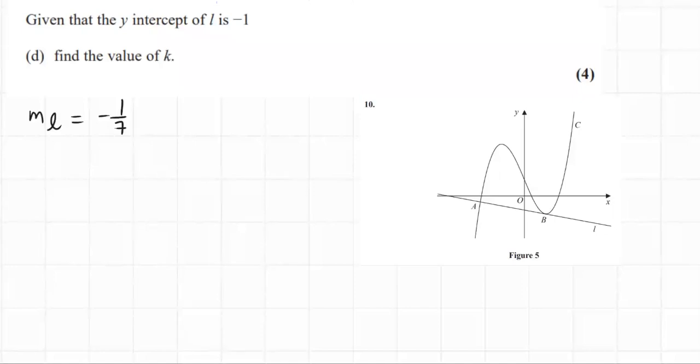In this question we had previously been given that the gradient of the line L, which is here, we worked out that the gradient, which is small m, is equal to negative 1 over 7.